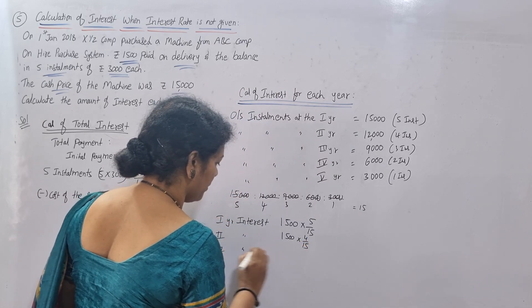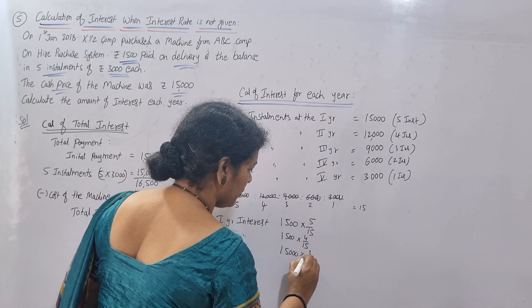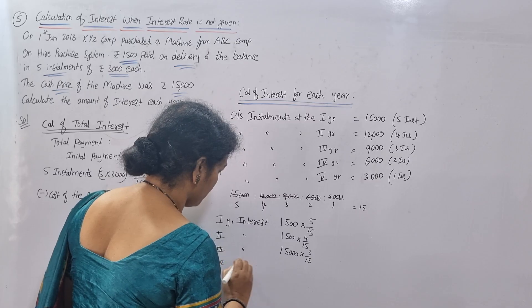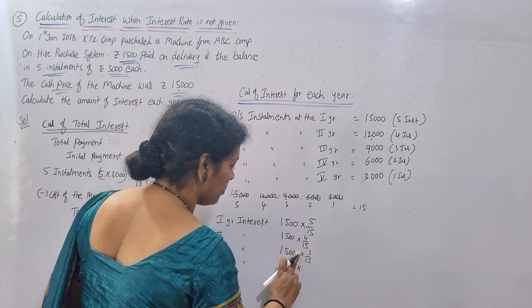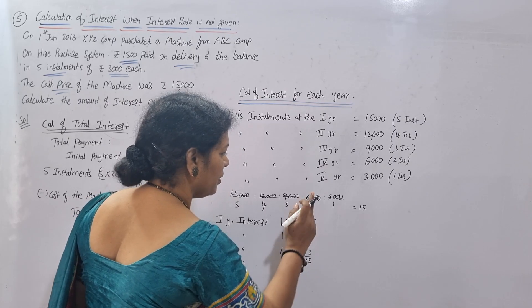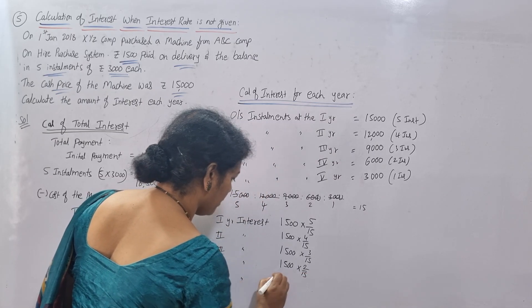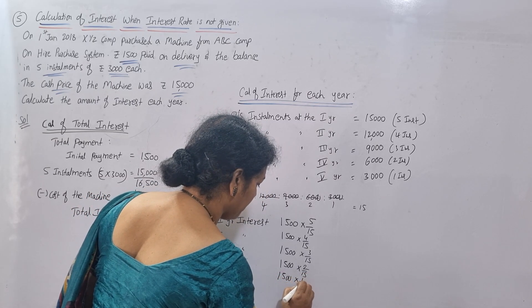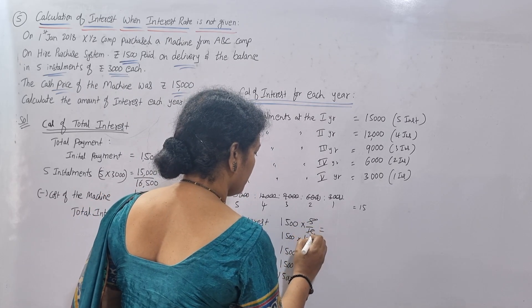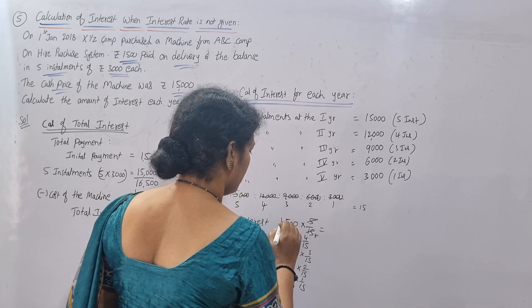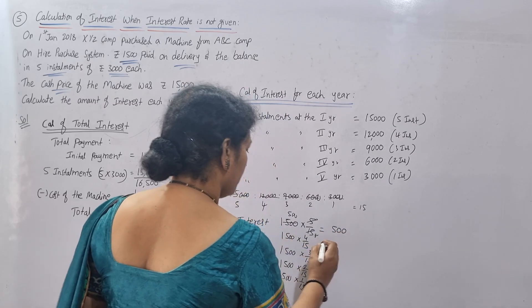For Year 3, interest = ₹1,500 × 3/15. For Year 4, interest = ₹1,500 × 2/15. For Year 5, interest = ₹1,500 × 1/15. Calculating these: Year 1 = ₹500, Year 2 = ₹400 — and you can verify that all five values add up to ₹1,500.